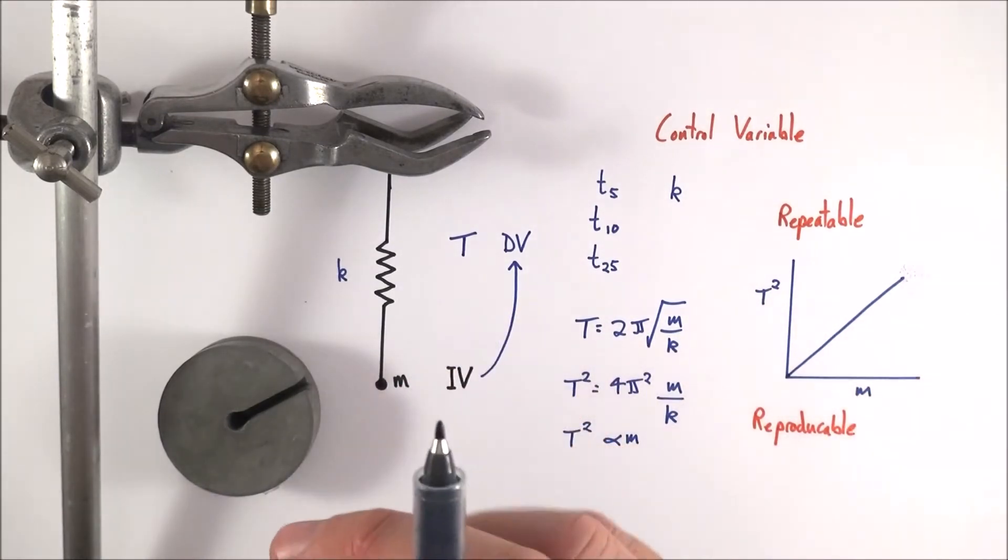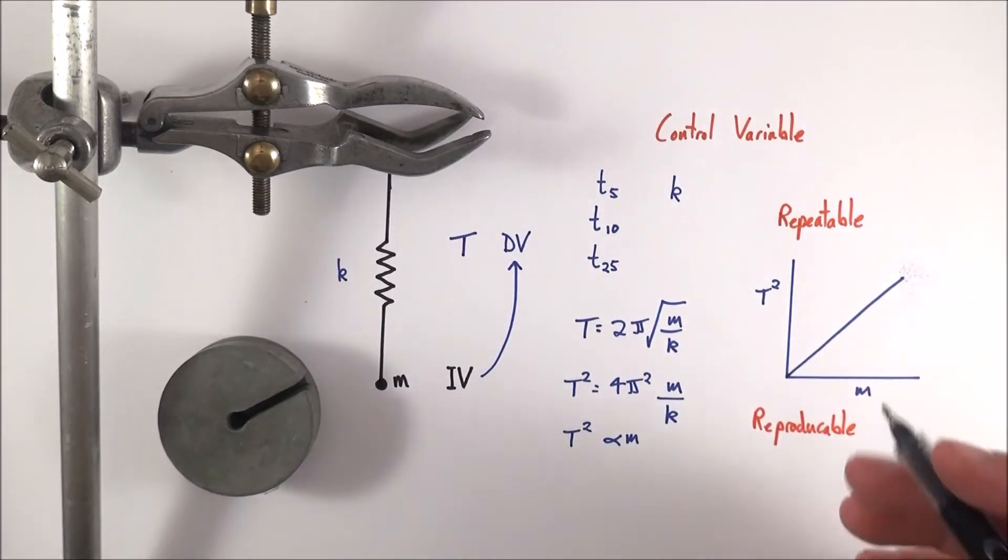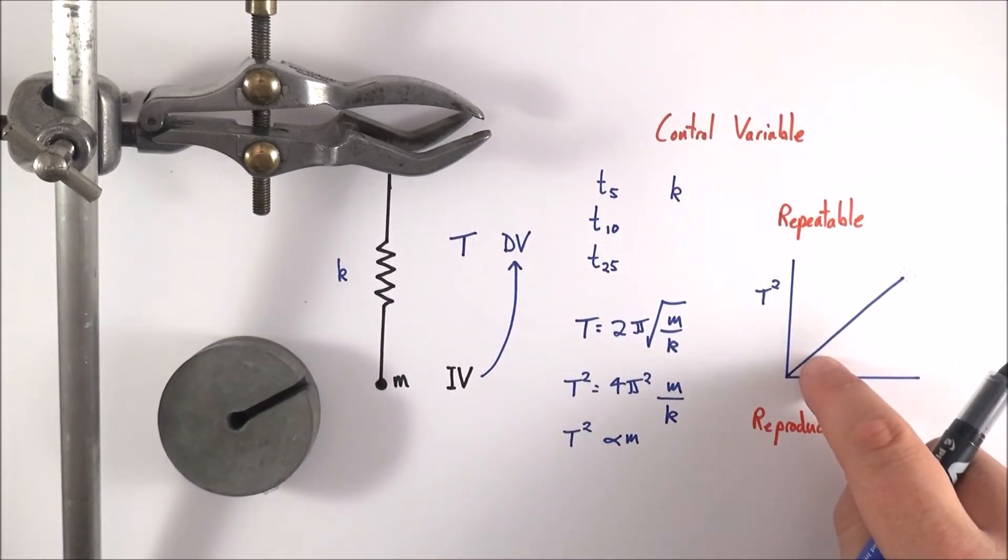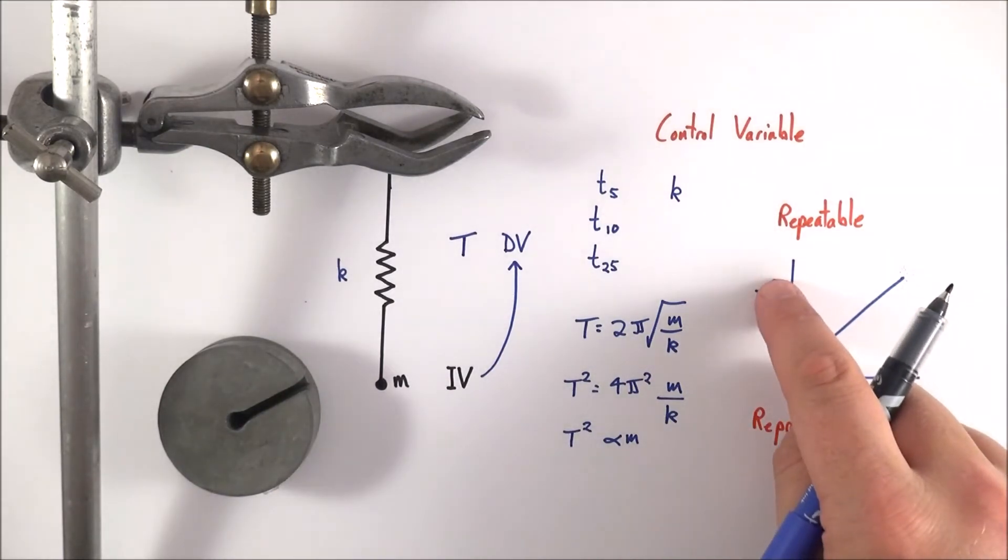And if it's a fair test, your results should then be repeatable and reproducible. And what this means is that we can then identify some trend within your data. And what we then have is a correlation between maybe your independent variable and your dependent variable.